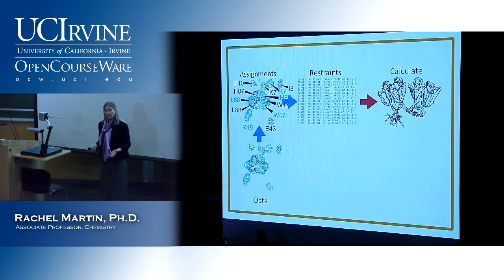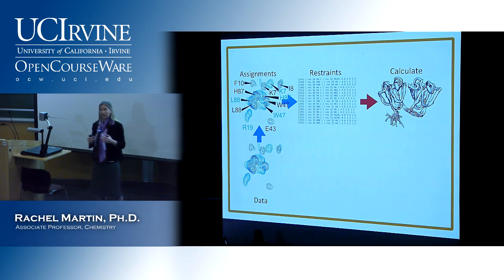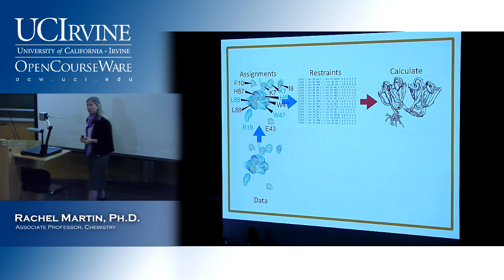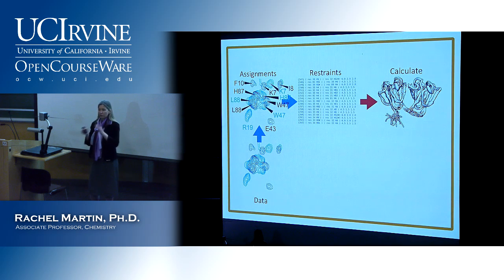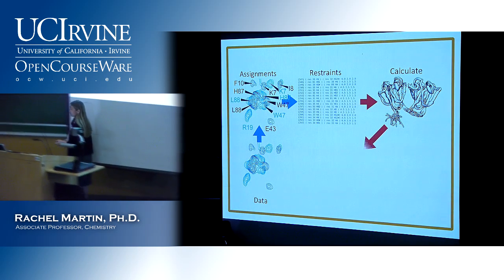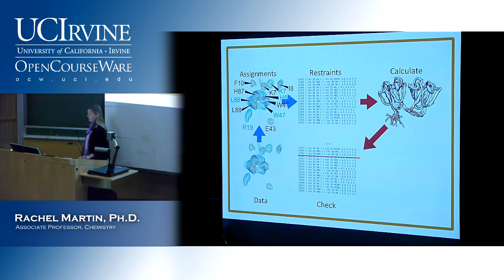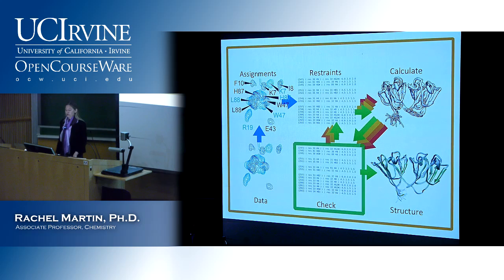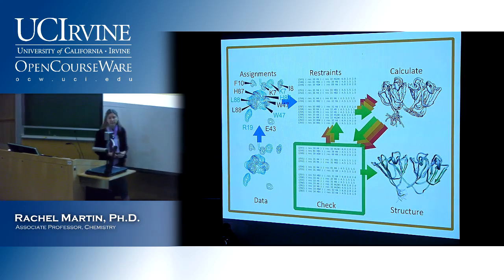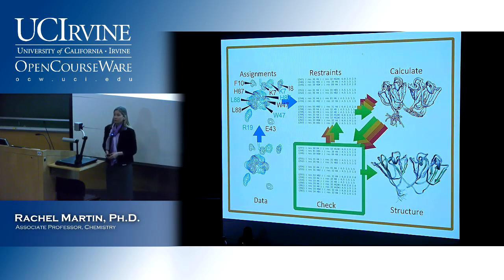All these distance restraints — thousands of them — are fed into a molecular dynamics simulation that uses them as structural constraints. You minimize the energy and hopefully get a reasonable structure. Then you iterate: some assignments may be wrong and need correction. Eventually the family of structures starts to converge. This is how you solve an NMR structure.